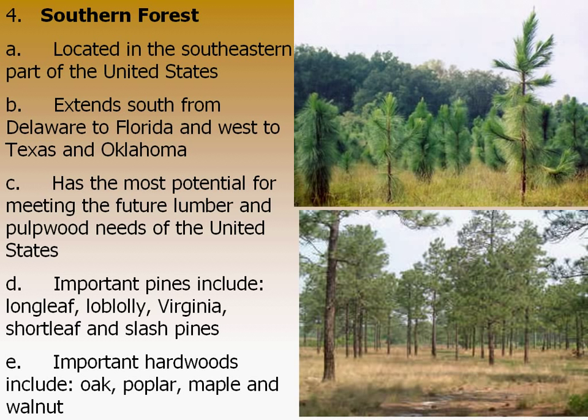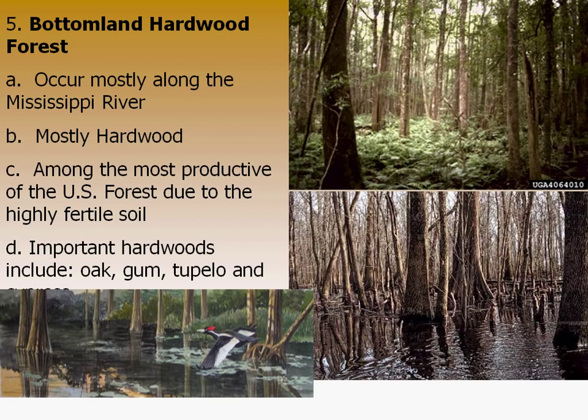The bottomland hardwood forest occupies the area mainly along the Mississippi River and is dominated by oaks, black gum or water tupelo, and cypresses. This hardwood forest is one of the most productive areas due to the highly fertile soil — it receives a lot of fine sediment from the regular flooding of the river systems, so the soils are rich and support some high quality hardwoods.